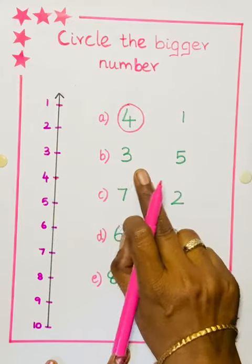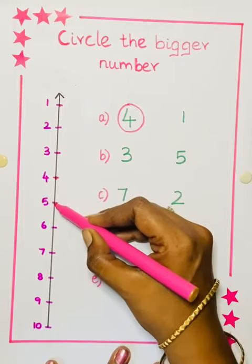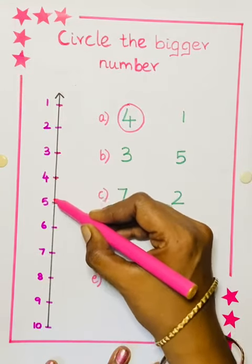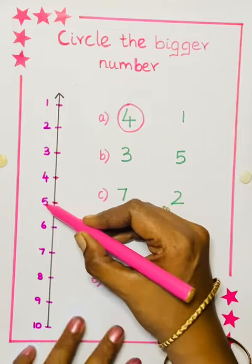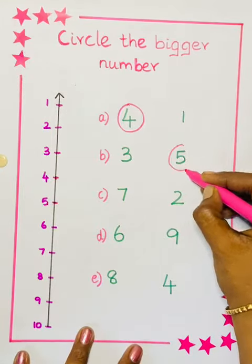Next one. 3, 5. See the number line. 3 is here and 5 is here. Which is bigger? 5. So, we have to circle the number 5.